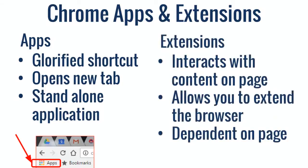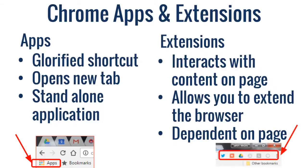Next, extensions. Extensions somehow extend the page that you're on, so it interacts with that content on the page, allowing you to extend the browser in some way. Because of that, it is dependent on the page that you're on, and typically you will find these up in the top right-hand corner. You will see some links to some of these extensions, and when you click on them, it will allow you to interact with the content on the page in some way.